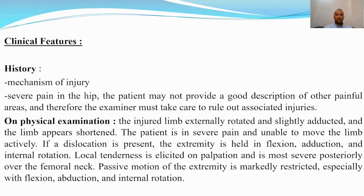If there is a dislocation, the extremity is held in flexion, adduction, and internal rotation. On examination there is local tenderness, usually over the femoral neck, and passive motion of the extremity is markedly restricted, especially with flexion, abduction, and internal rotation.